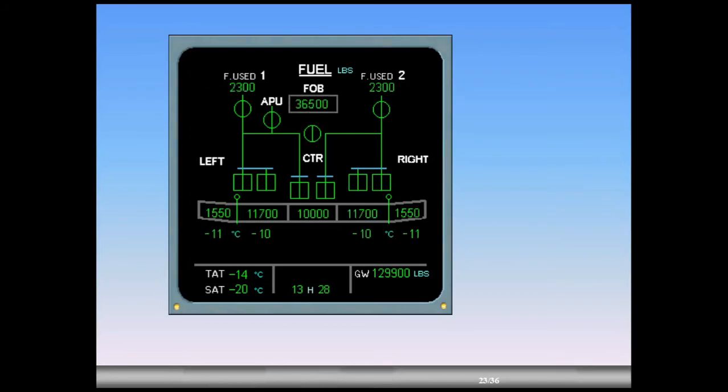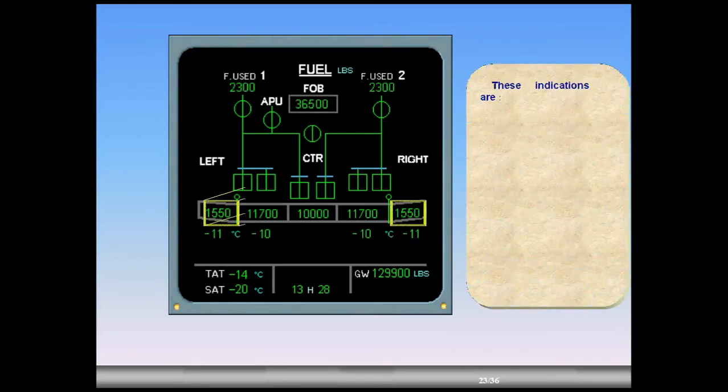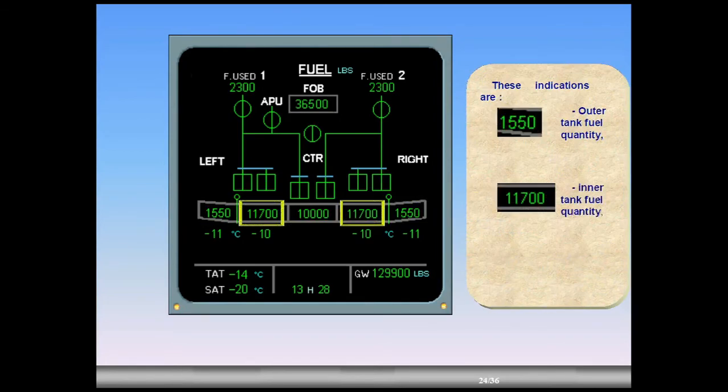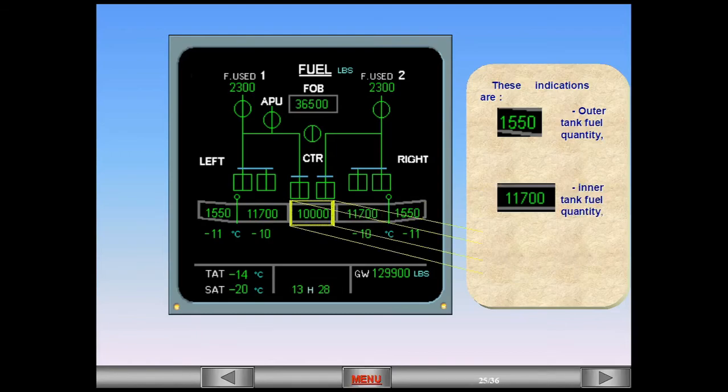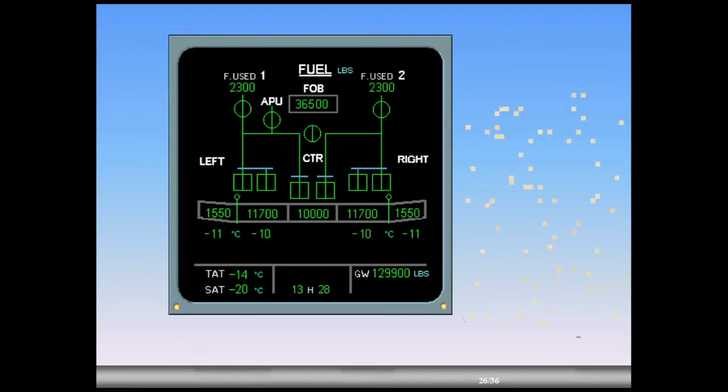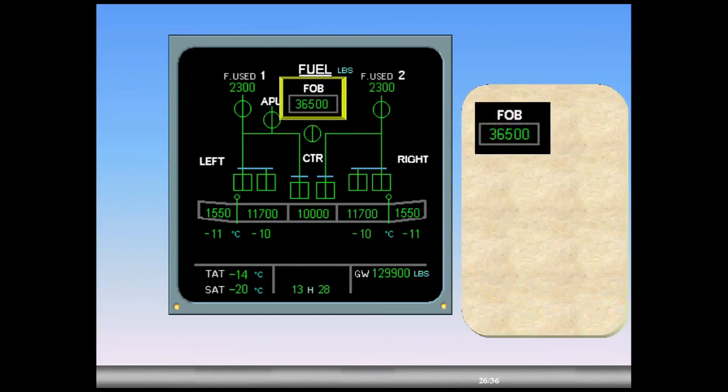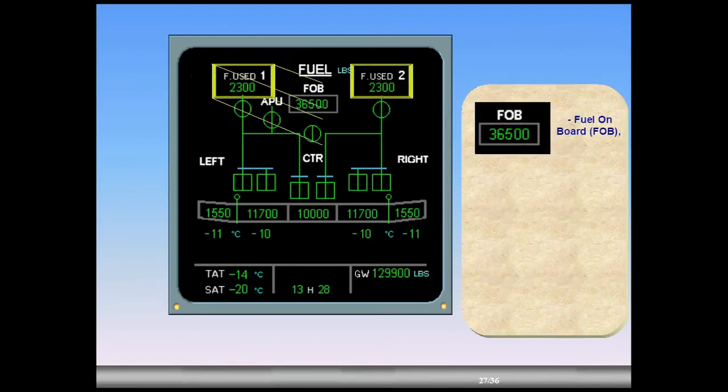These indications are outer tank fuel quantity, inner tank fuel quantity, center tank fuel quantity, fuel on board (FOB), and fuel used quantity.